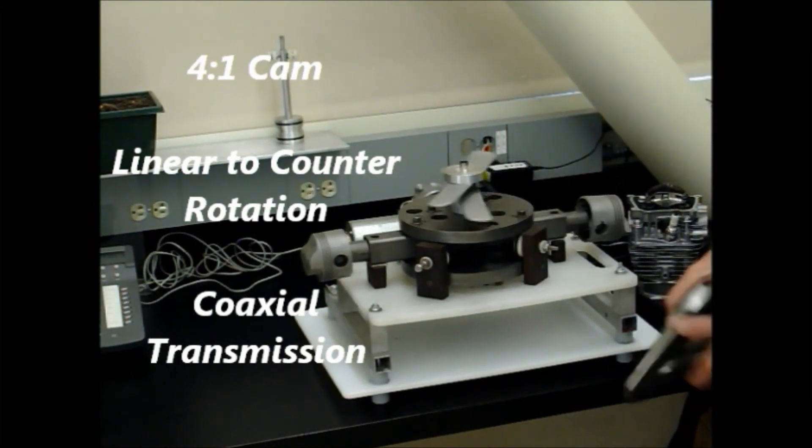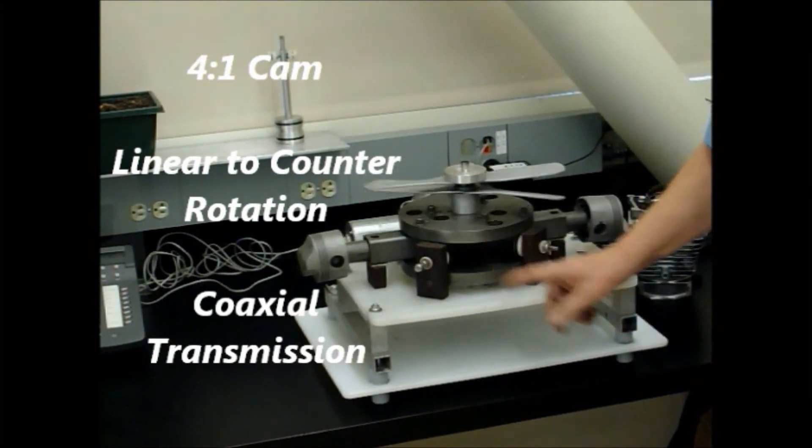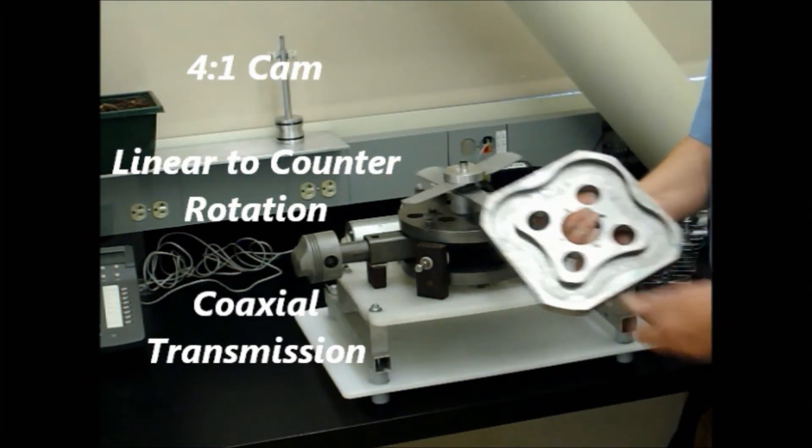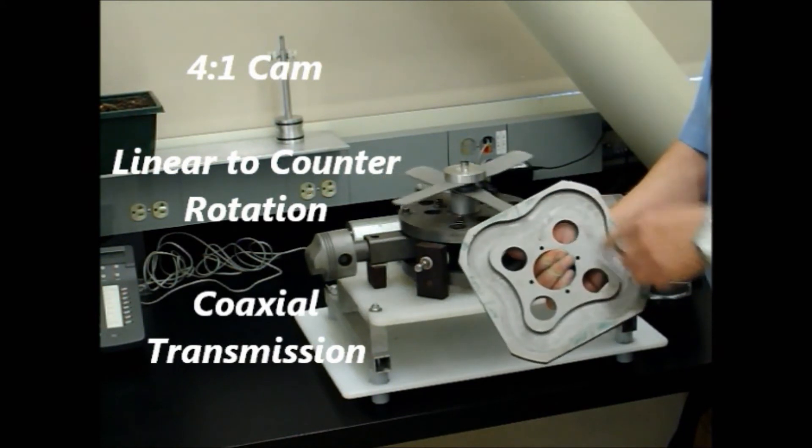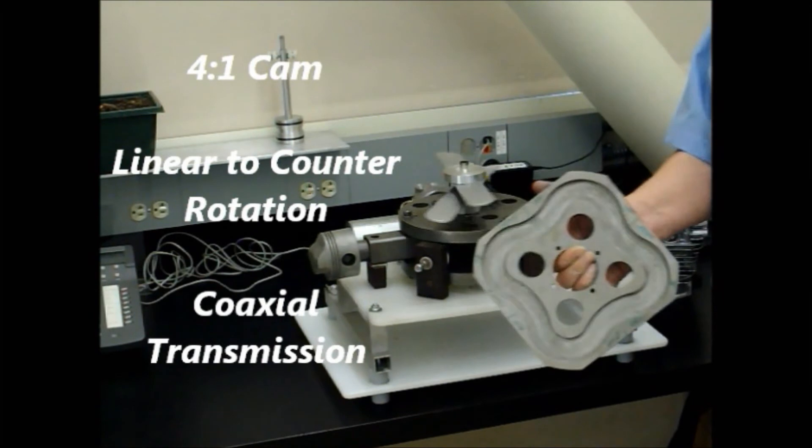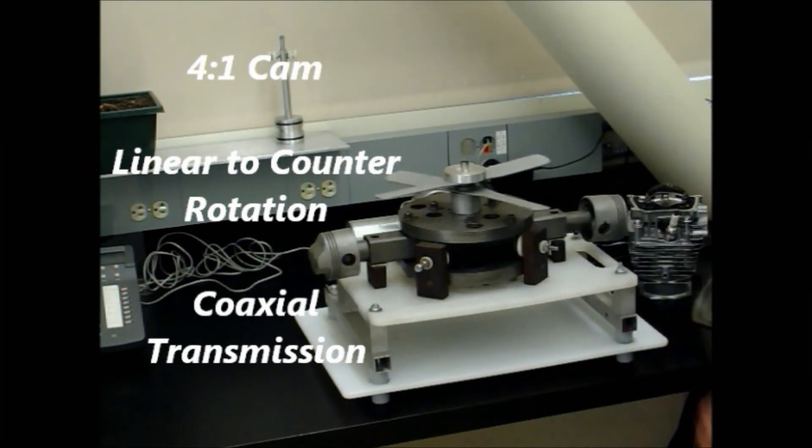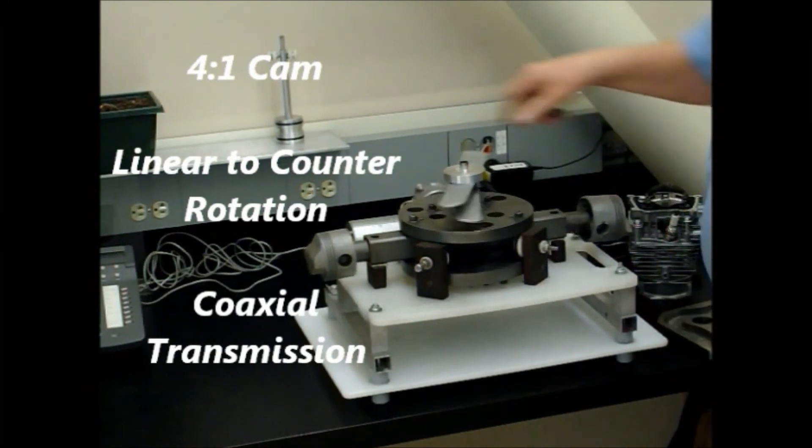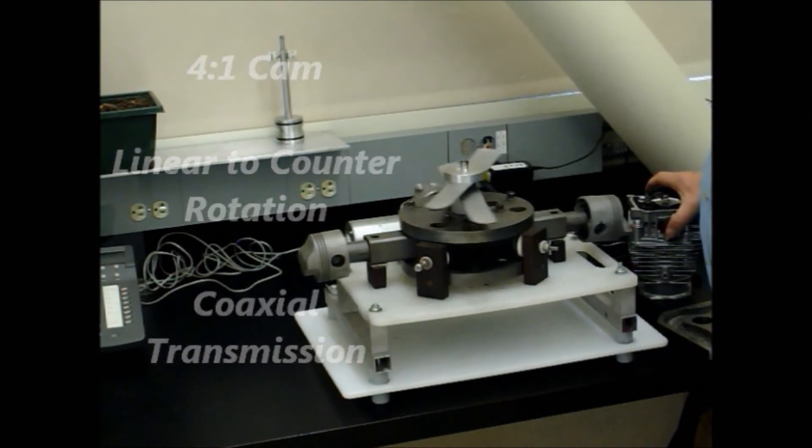Secondly, you might notice that this is a set of cams, not a crankshaft. That gives you the second feature. This cam has four lobes and results in a four-to-one ratio, reducing the speed of the piston to the desired speed of the rotors without a transmission at all.